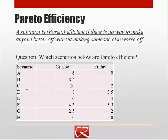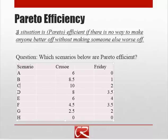Notice that this is about as far as we can go in judging the goodness here, because Crusoe and Friday are going to have very different opinions about which of C, D, and E is best. Friday, presumably, is going to prefer E, and Crusoe is going to prefer C. So this way of looking at efficiency, we're trying to not take the viewpoint of either of them — we're trying to say, in as value-neutral a way as possible, that a situation is efficient if it's non-wasteful.